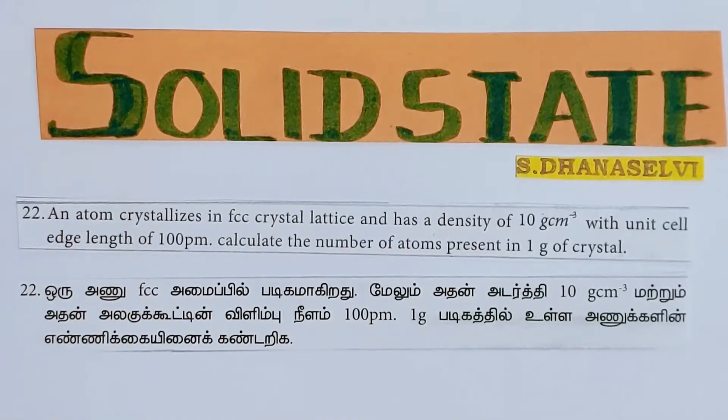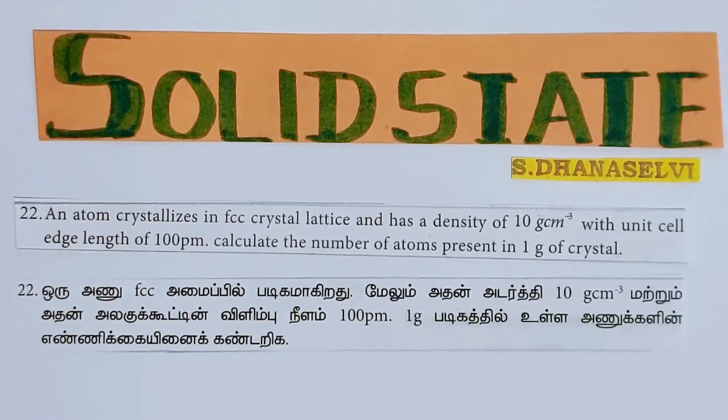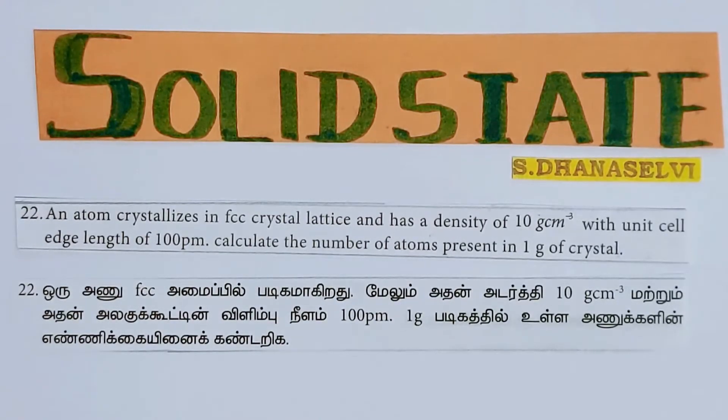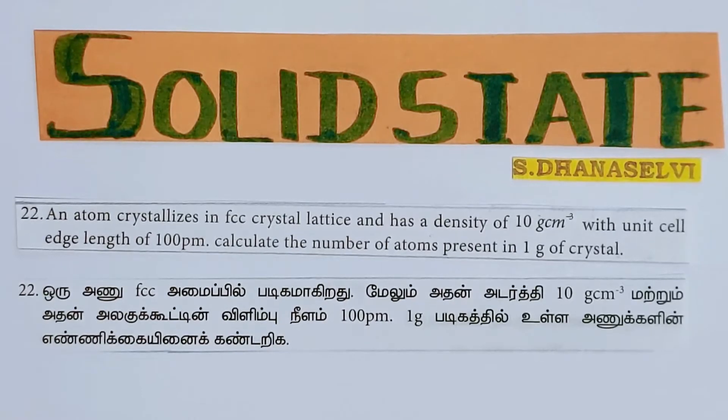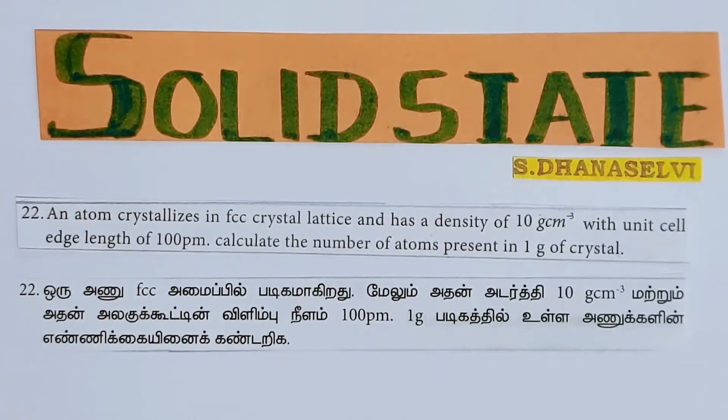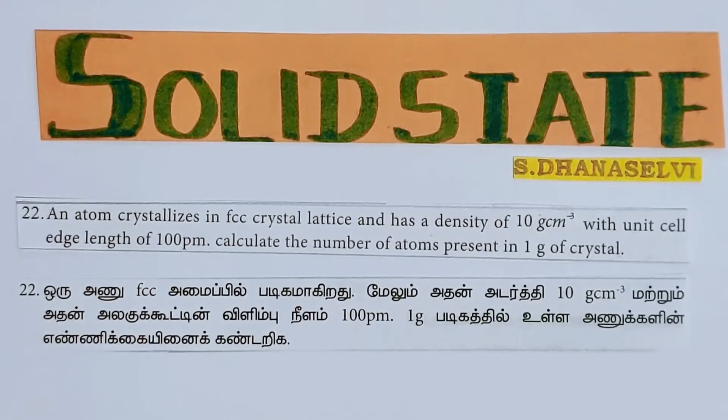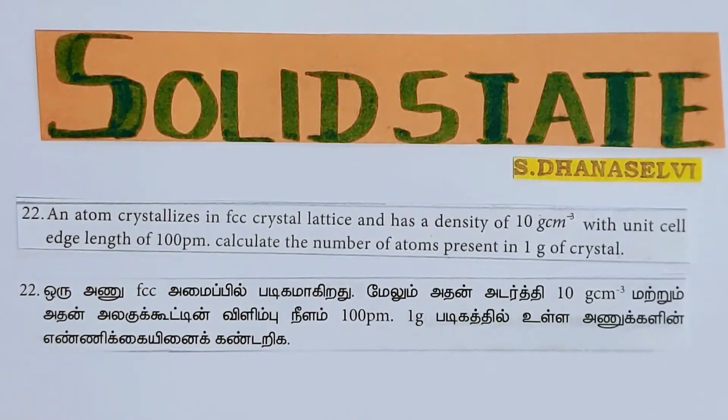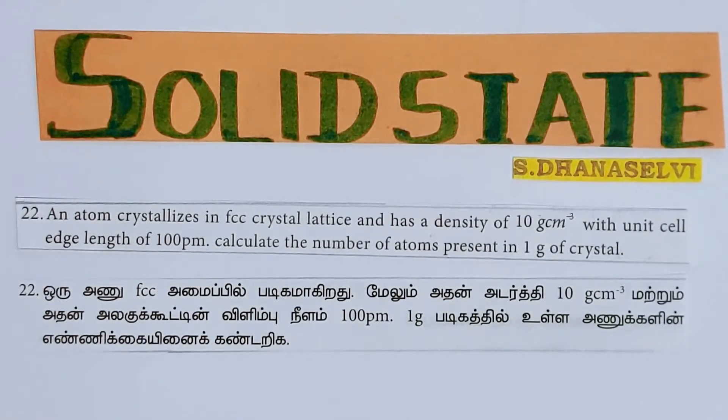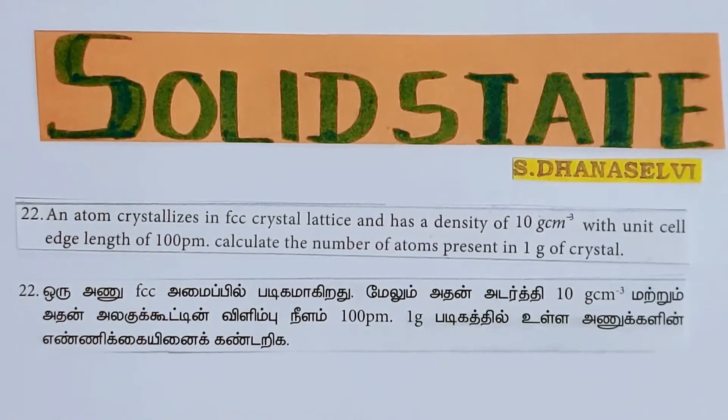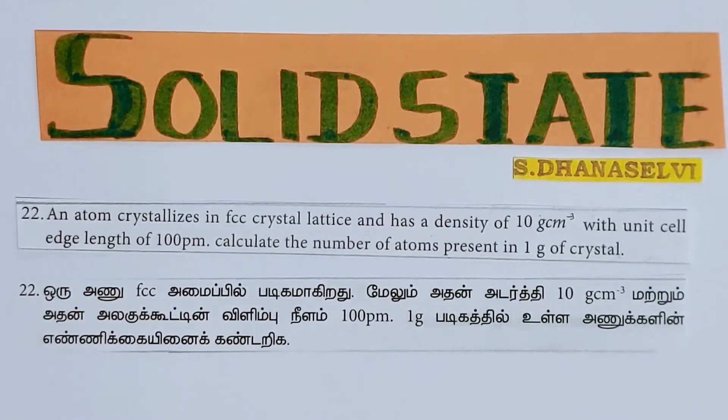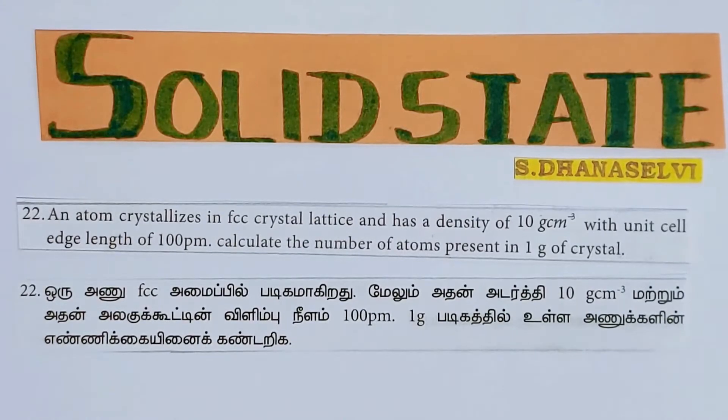Let's read the question first. Question 22: An atom crystallizes in FCC crystal lattice and has a density of 10 gram per centimeter cube with unit cell edge length of 100 picometer. Calculate the number of atoms present in 1 gram of crystal.